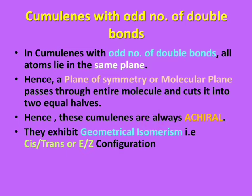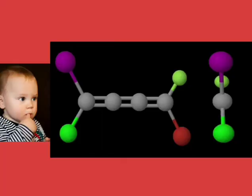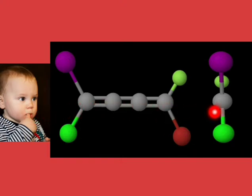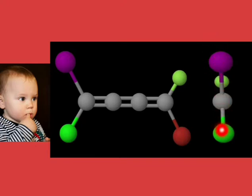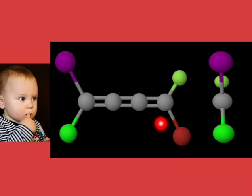Let us now understand this in a much better manner with this example. If we look at this molecule from this boy's point of view, it would look something like this. Since all the atoms are in one plane, you can see that this green and this red atom are hidden behind this purple and this green atom. Accordingly, a plane can pass through this molecule, cutting it into two equal halves. So this cumulene with odd number of double bonds — here you can see there are three double bonds — is always achiral.